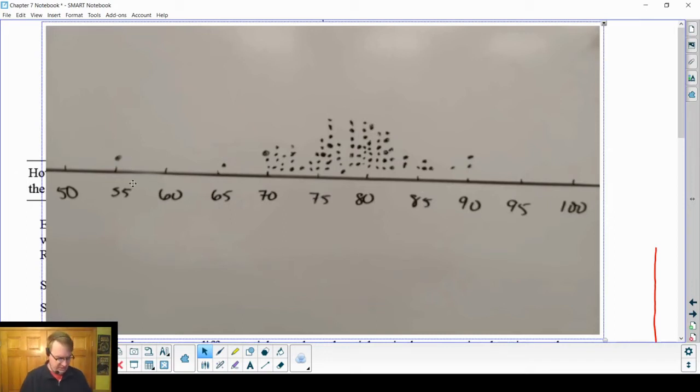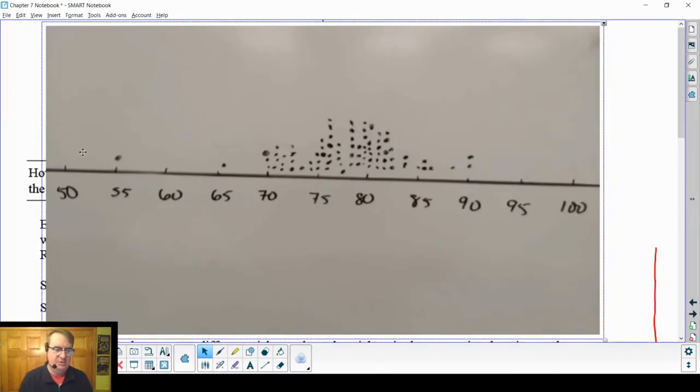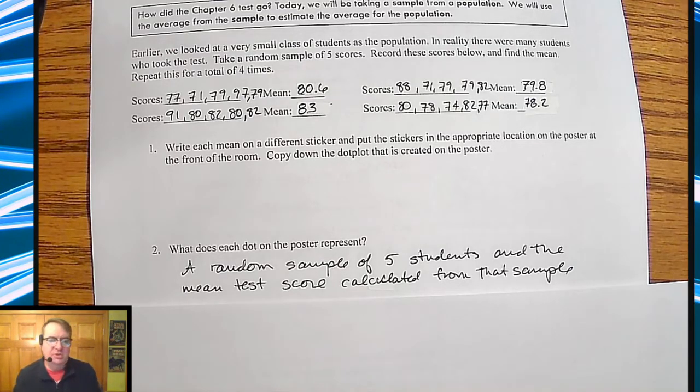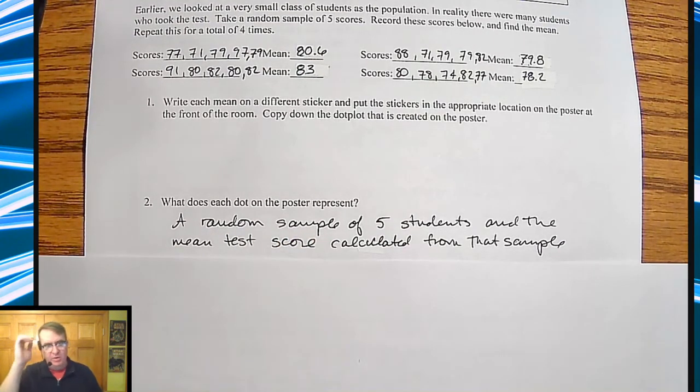So it kind of makes for an interesting thing. And, you know, so there's some discussion about what happened here, especially given the fact that, if I remember correctly, we only had 155. So there's no way. So this person just goofed up. And, but we got a 66, got a 290s, that type of thing. And so it was some interesting discussion going on from that. So then the next question is, back over here, is what does each dot on the poster represent? It's going to be a random sample of five students and the mean test score of that sample.